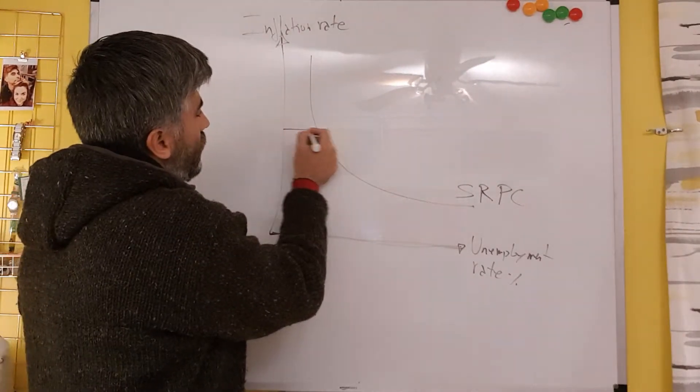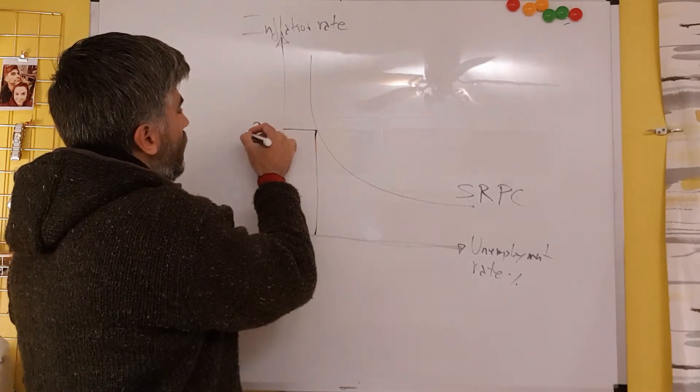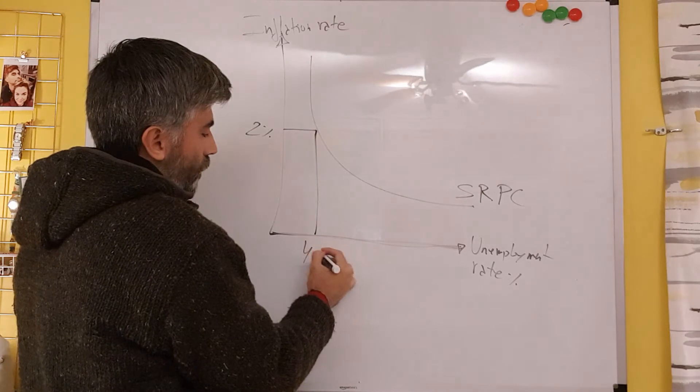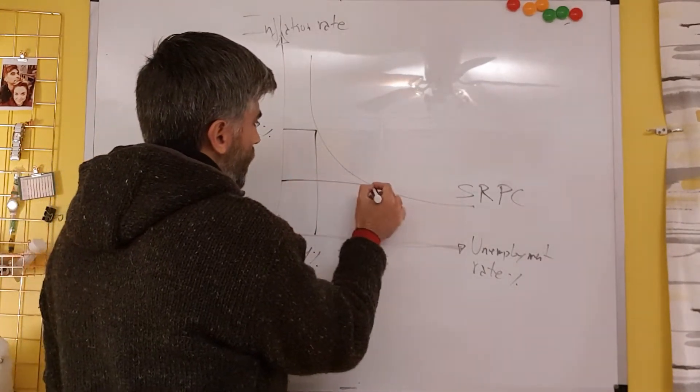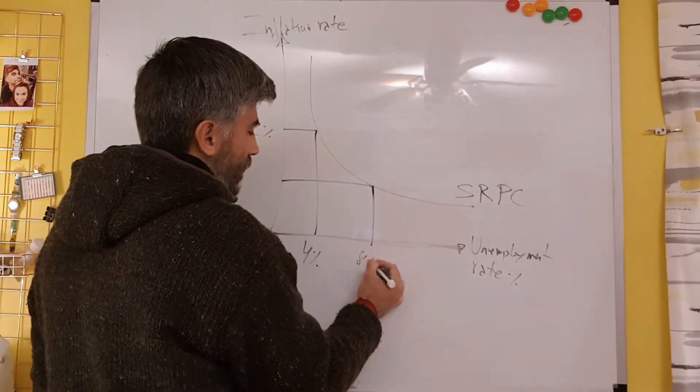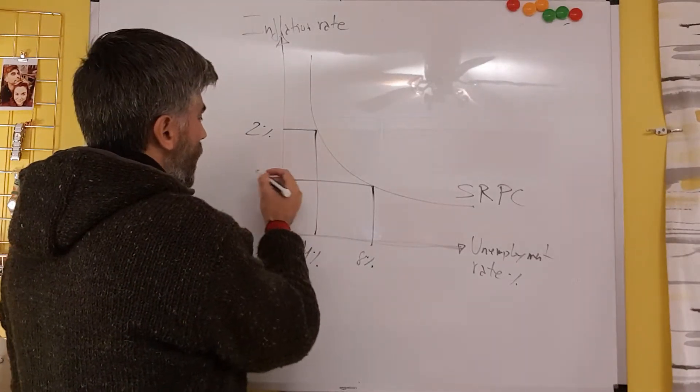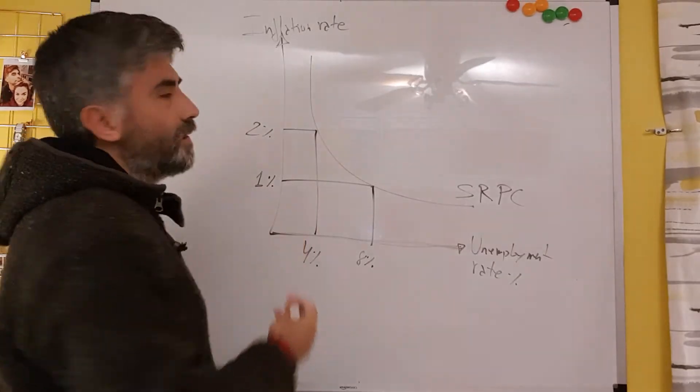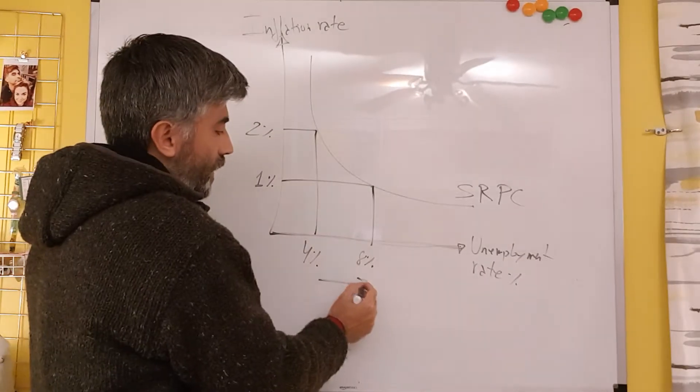We can see that at a certain rate of inflation, let's say at a 2% rate of inflation, we have a rate of unemployment of 4%. On the other hand, at a rate of unemployment that is higher, let's say 8%, inflation will drop. Currently, we're on around 1% inflation. We can see that currently, because of the pandemic, we have a higher level of unemployment.